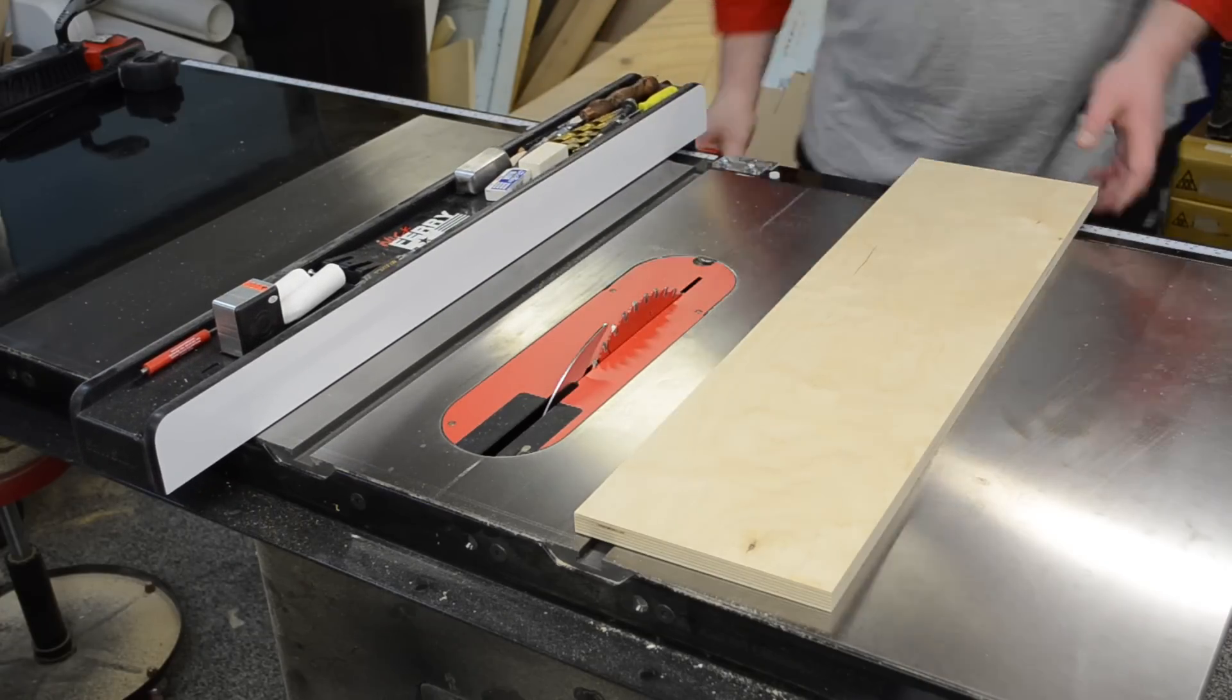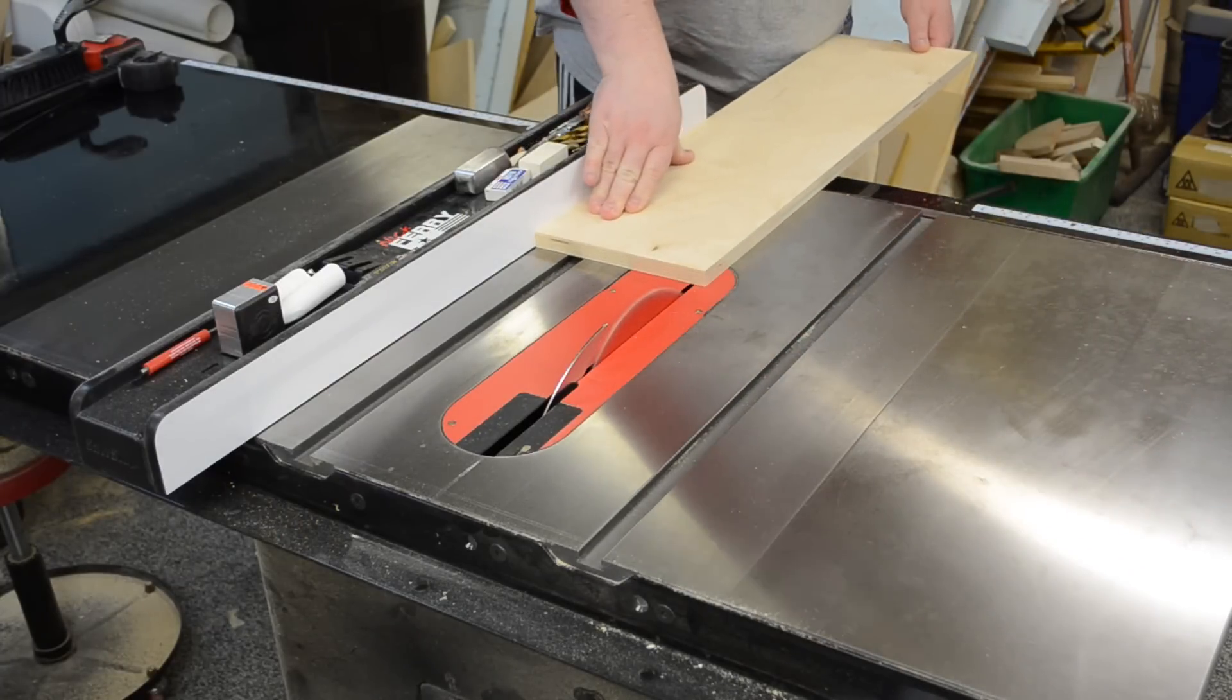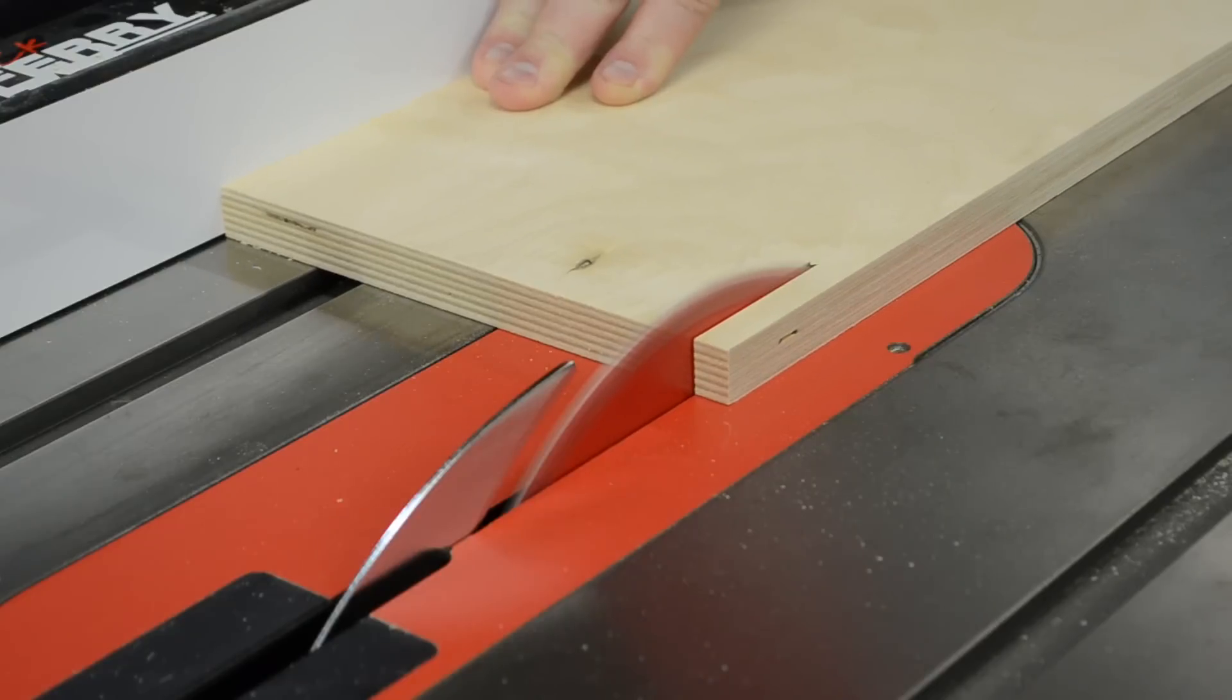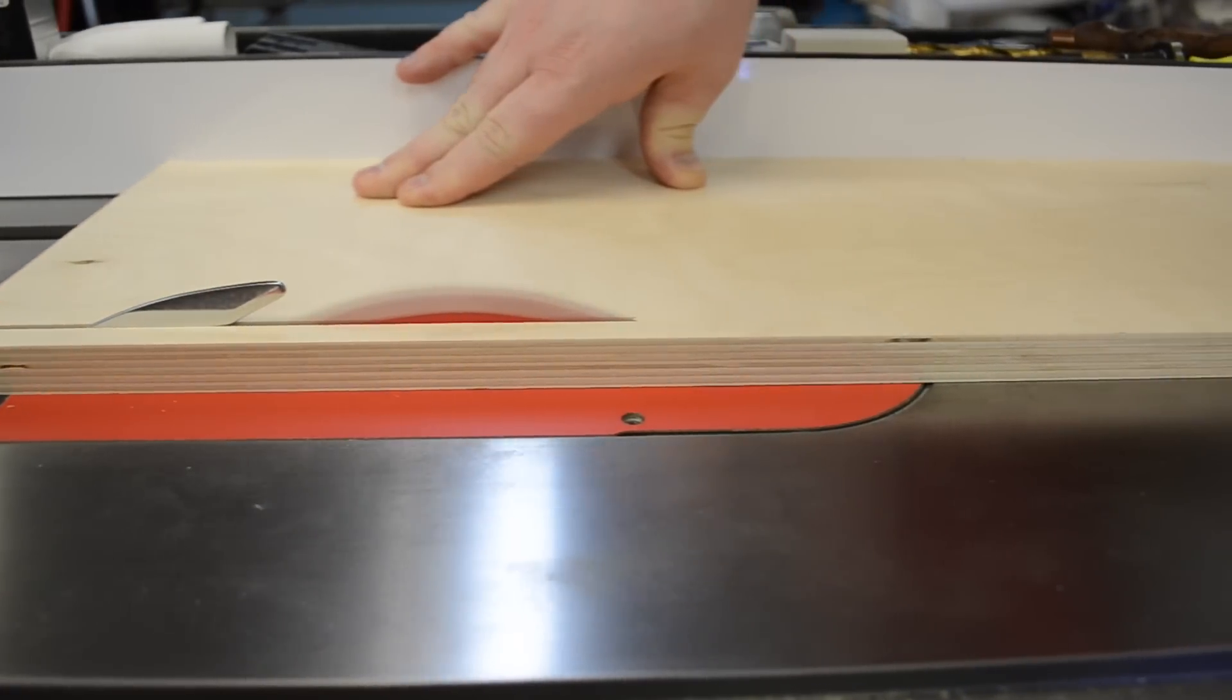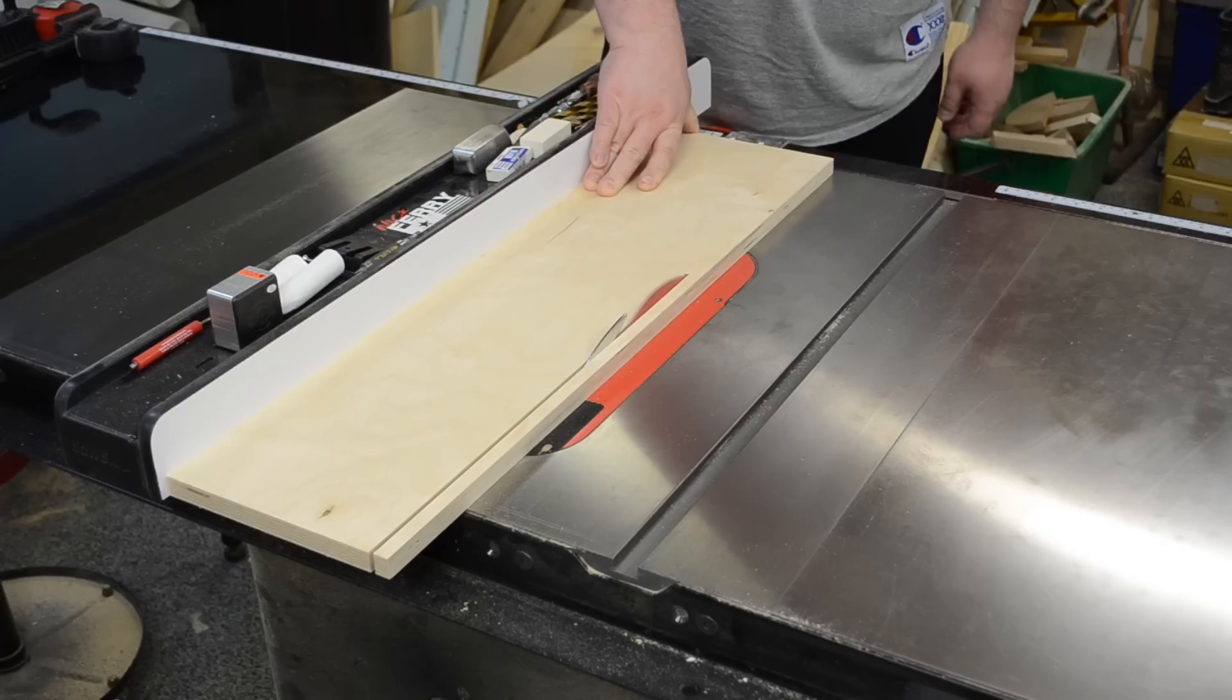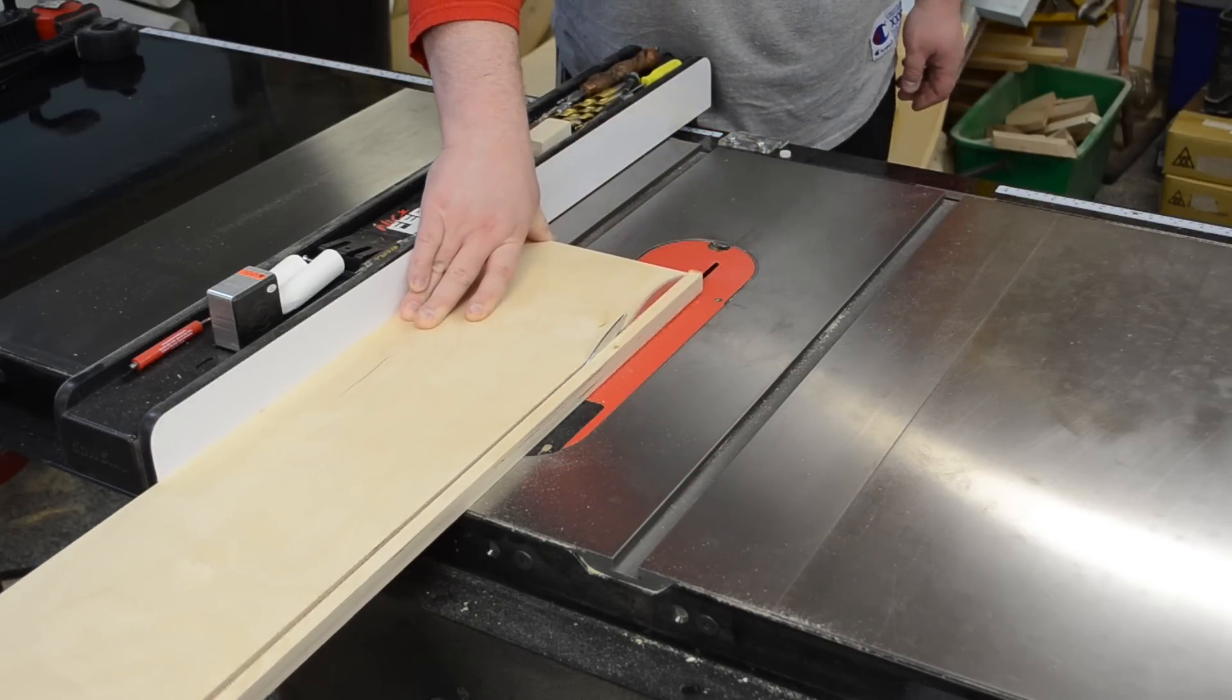I started by cutting all my pieces to final width. My wood of choice for this was three-quarter inch Baltic birch plywood. You can use just about any type of wood or plywood that you have available. I just prefer Baltic birch not only because it looks nice, but there's very few voids and it's a rather stable wood to use.